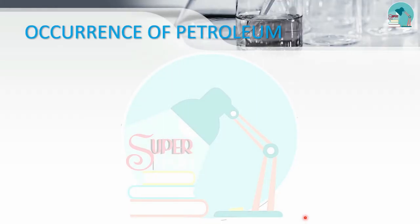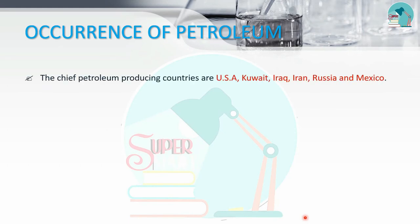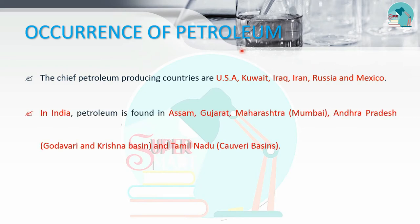The chief petroleum-producing countries are USA, Kuwait, Iraq, Iran, Russia, and Mexico. In India, petroleum is found in Assam, Gujarat, Maharashtra, Mumbai, Andhra Pradesh, and the Godavari-Krishna Basin. In Tamil Nadu, it is found in the Cauvery Basin.